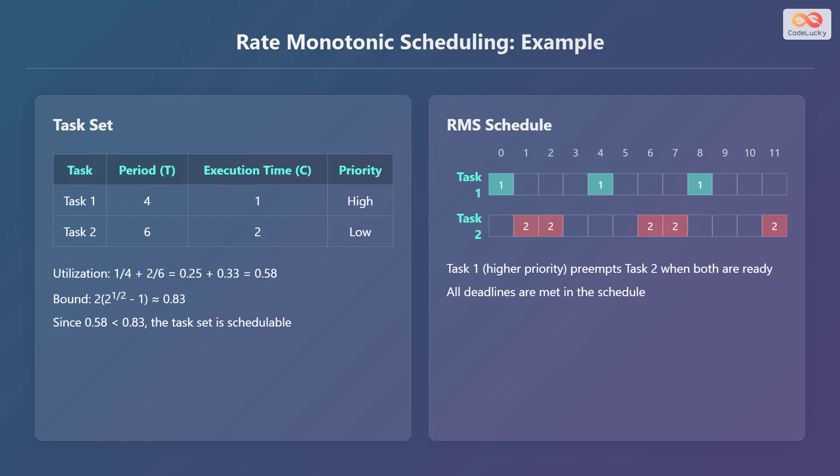The utilization is 1/4 plus 2/6, which equals 0.25 plus 0.33, resulting in 0.58. The bound, calculated as 2 × (2^(1/2) − 1), is approximately 0.83. Since 0.58 is less than 0.83, the task set is schedulable.